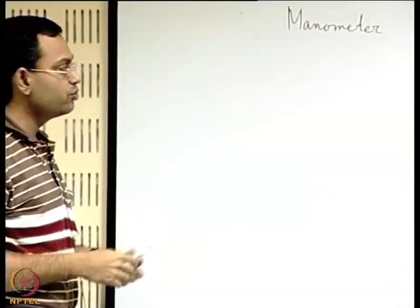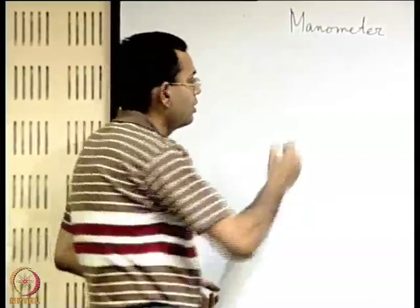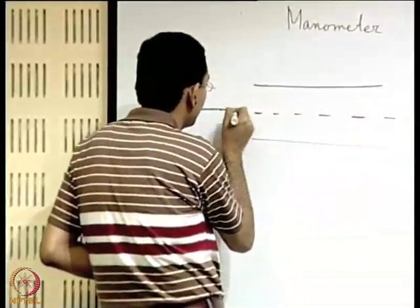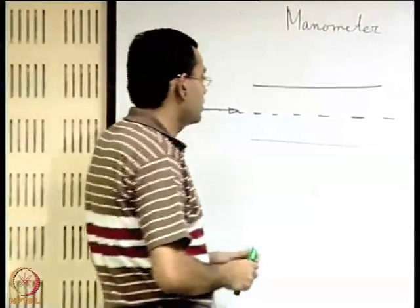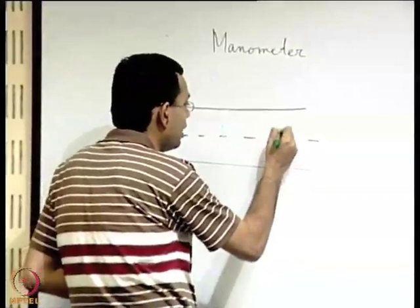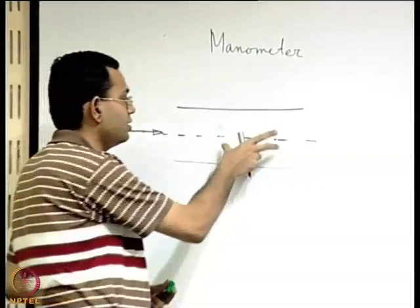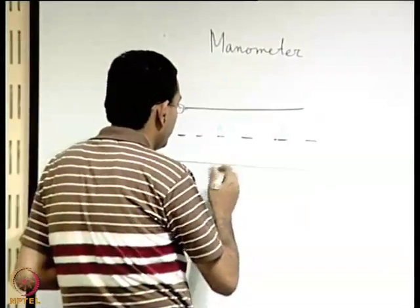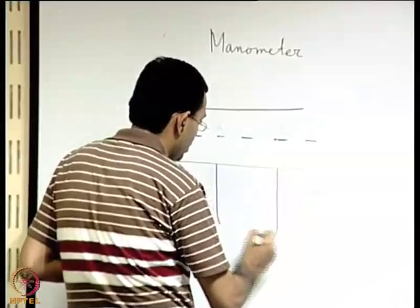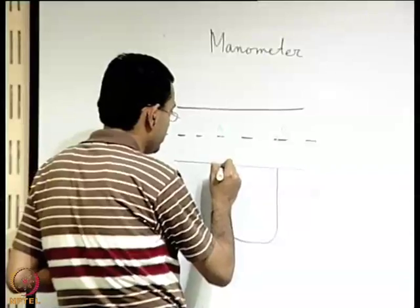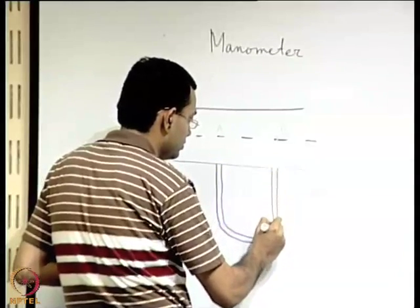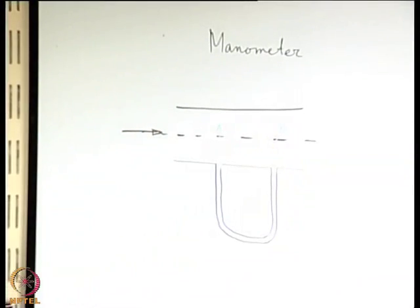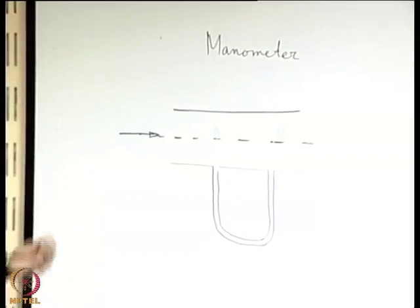Since this concept is well known to you, we will briefly recapitulate it through an example. Let us say that there is a pipe with some fluid entering it, with 2 different sections marked A and B. We are interested to find out the difference in pressure across these 2 sections. To do that, we will consider a U-tube connected across these sections. This U-tube will be the so-called manometer, and it will try to measure the pressure difference between these 2 points.